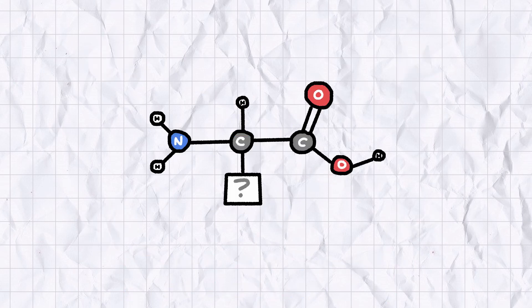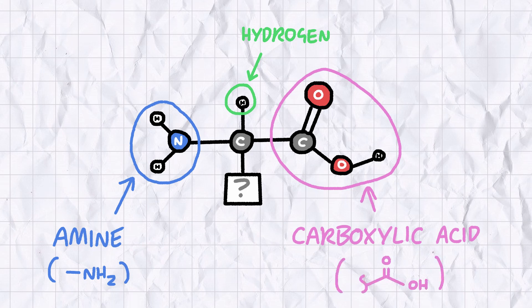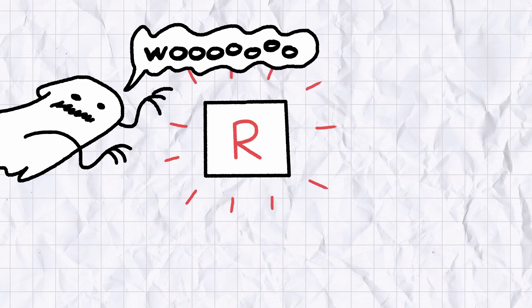Structure-wise, an amino acid is just a carbon atom bonded to four different chemical substituents. A hydrogen atom, an amine group, a nitrogen bonded to two hydrogens, and a carboxylic acid group, a carbon double bonded to an oxygen and an OH group. The fourth substituent is a sort of spooky mystery group, usually designated R.